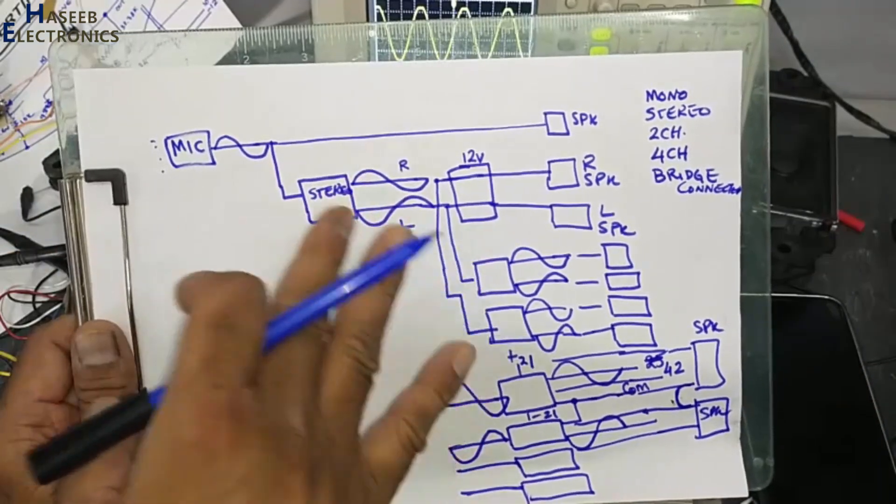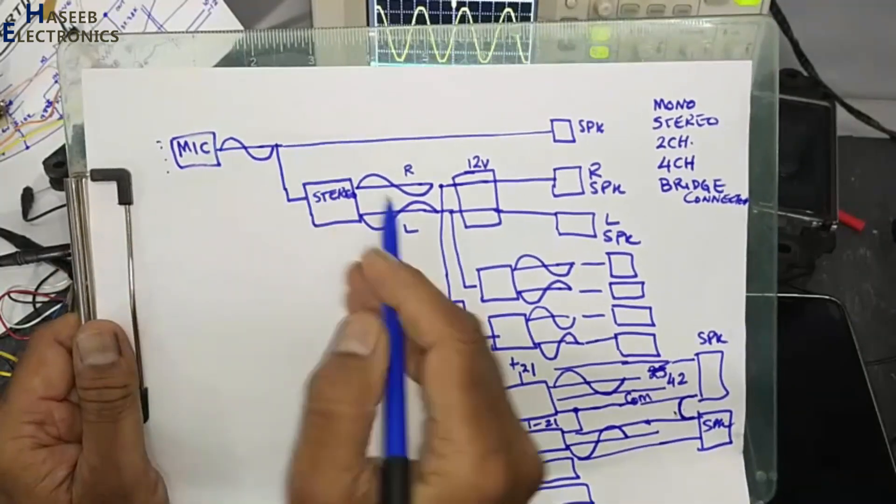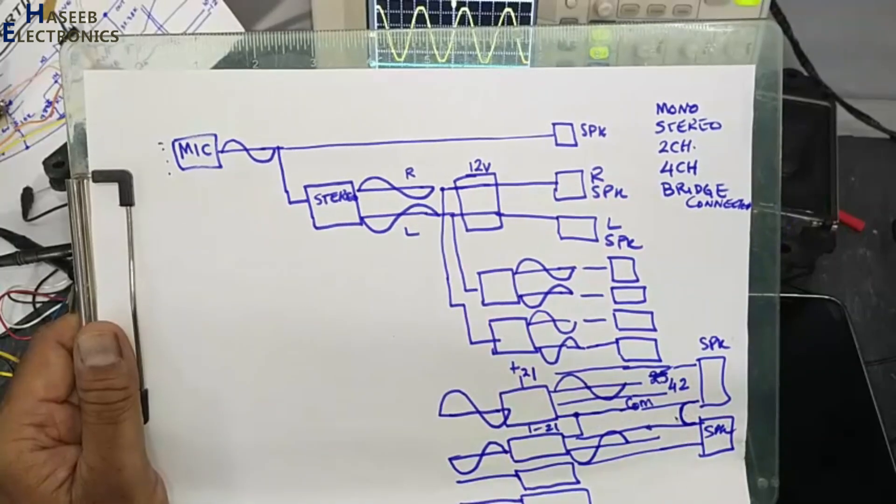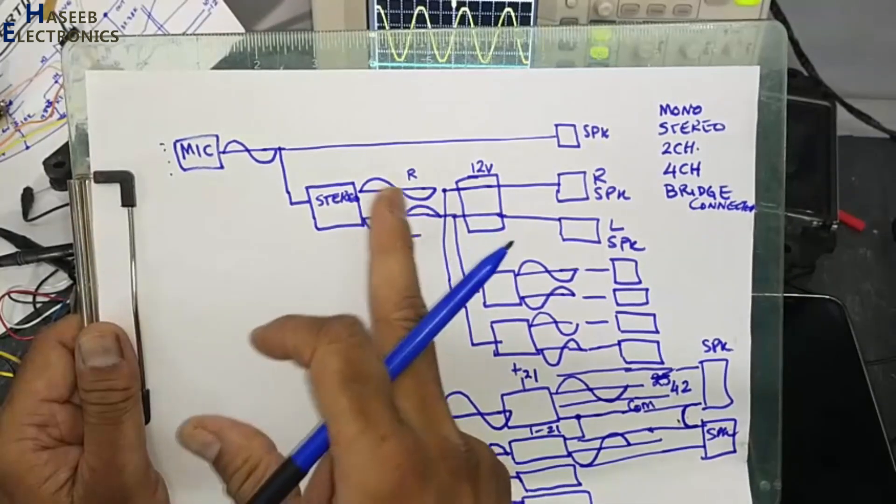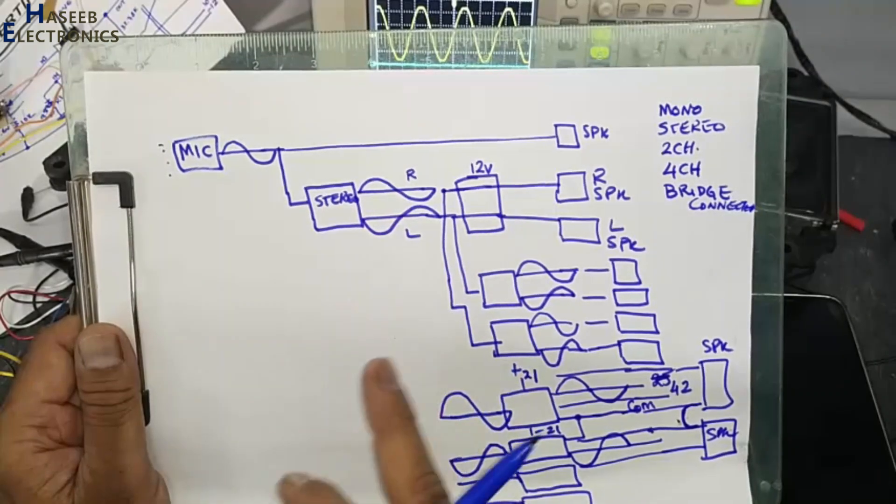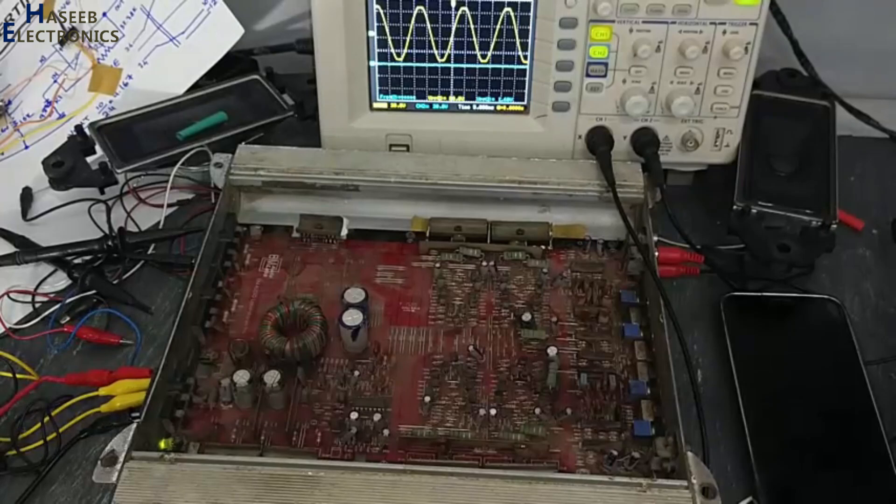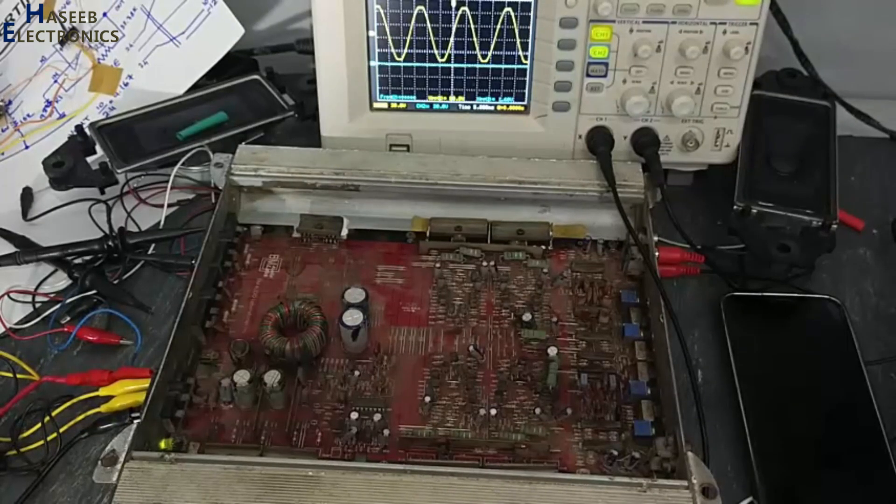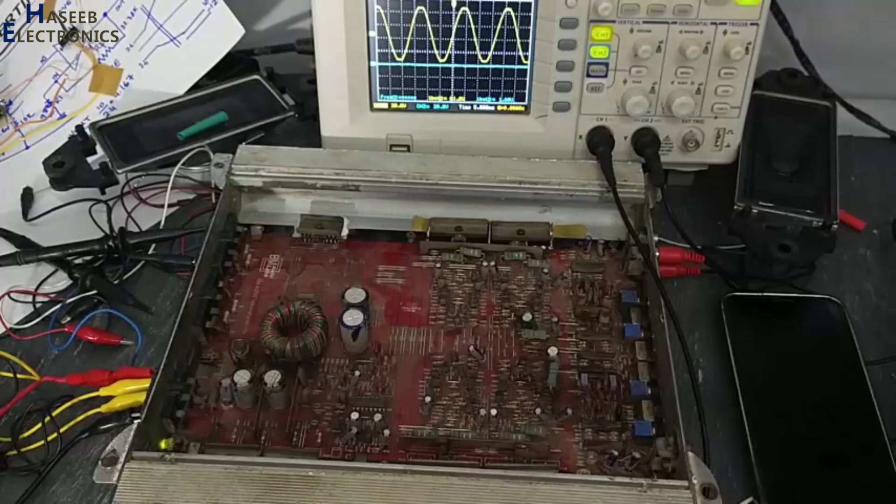Stereo is separated in opposite phases, but if we inject same signal here in both two channels, at that time both speakers will work in parallel. That is called parallel configuration or mono configuration, that mono audio is injected in both channels. I hope this video is informative for you. If it is good, give a thumbs up. If you have any question please write in the comments. Thanks for watching. Assalamu alaikum warahmatullahi wabarakatuh.